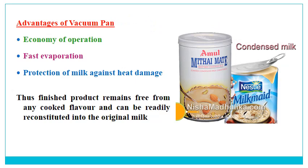The advantages of the vacuum pan include: economy of operation — the pan works with minimum energy utilization using steam as the main heating medium, so evaporation is very fast and efficient. The operation is fast. And third, protection of milk against heat damage. If evaporation is done slowly, the milk is exposed to high temperature for a long time causing heat damage. Therefore, the finished product remains free from cooked flavor and can be readily reconstituted, since exposure to high temperature is very brief. When milk is exposed to high temperature for longer periods, there is a cooking effect and production of certain components like sulfides that give a cooked flavor — this is avoided here.